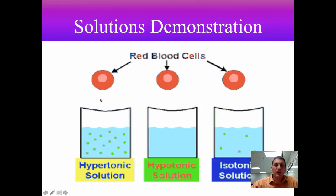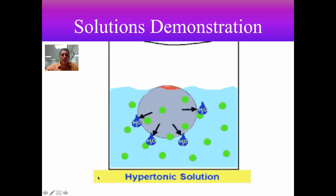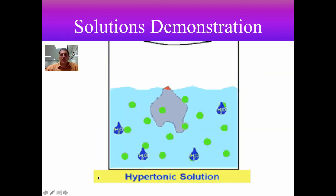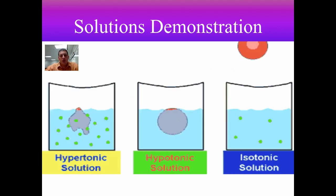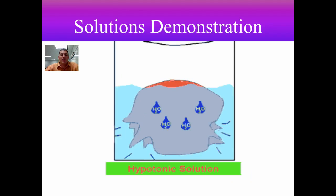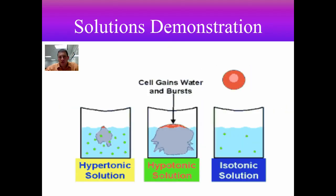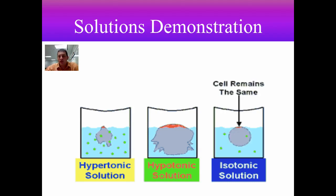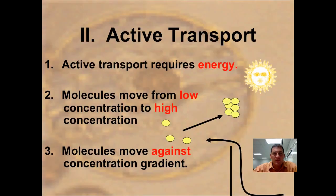Here's a basic demonstration: if you put a red blood cell in a hypertonic solution, water rushes out and it gets smaller. In a hypotonic solution, water rushes in, it gets bigger and may eventually burst — going through lysis. In an isotonic solution, the cell remains the same because inside and outside concentrations are equal.